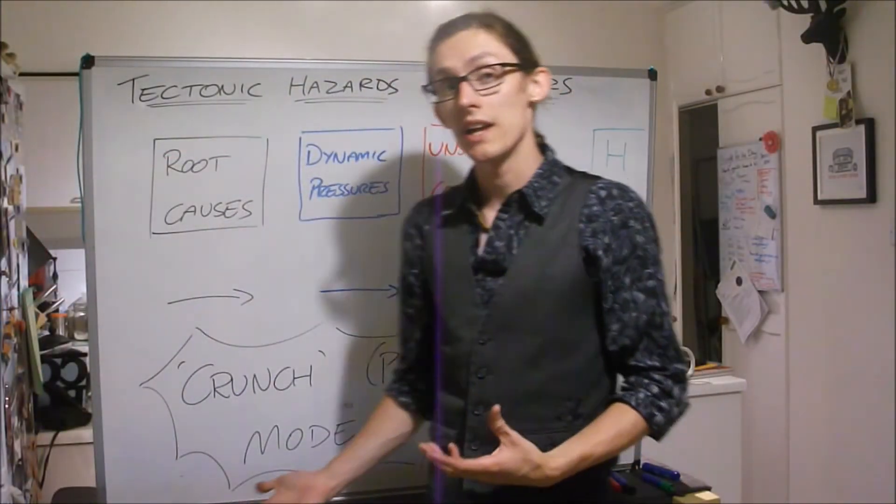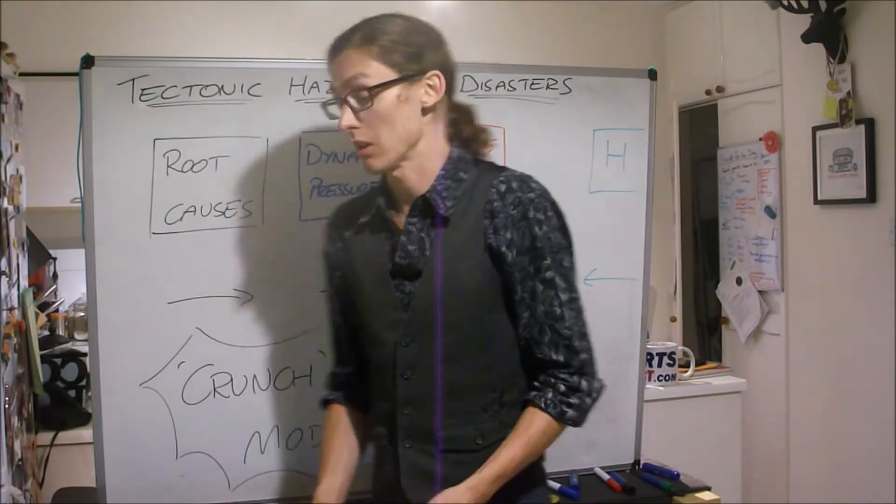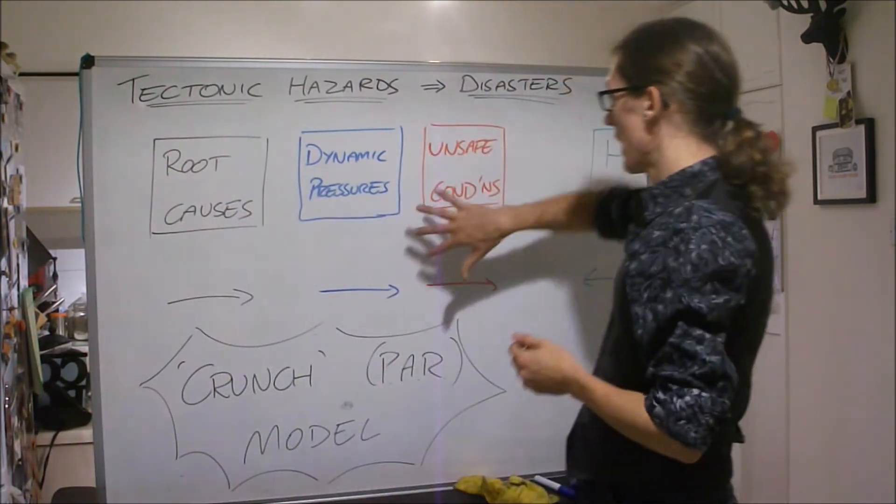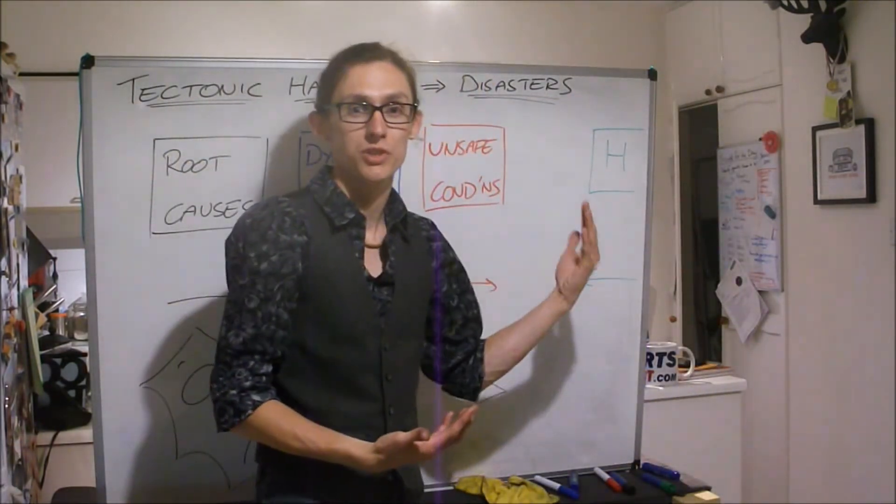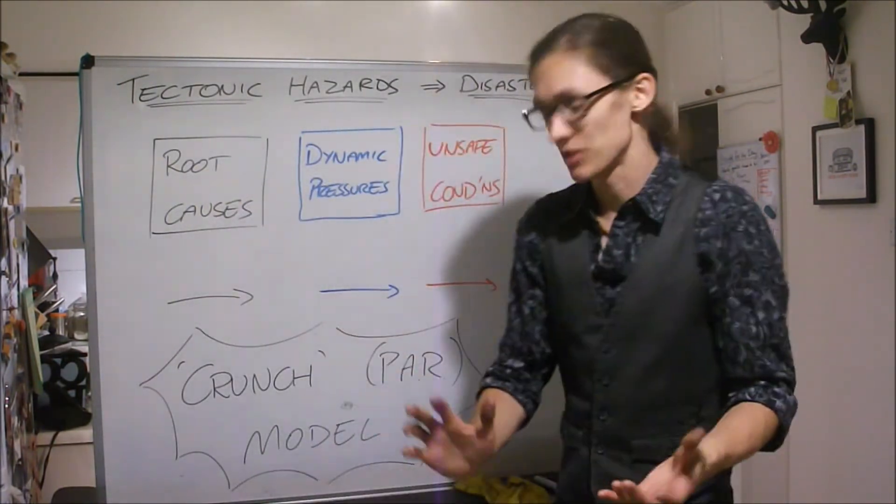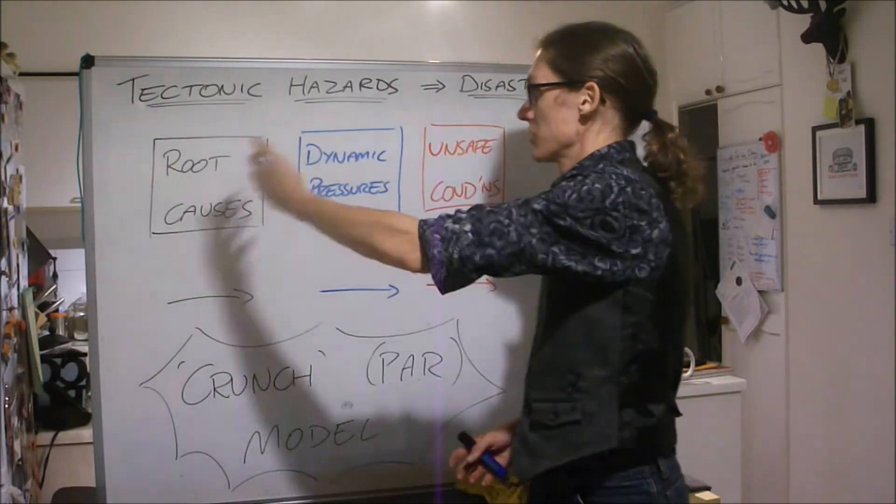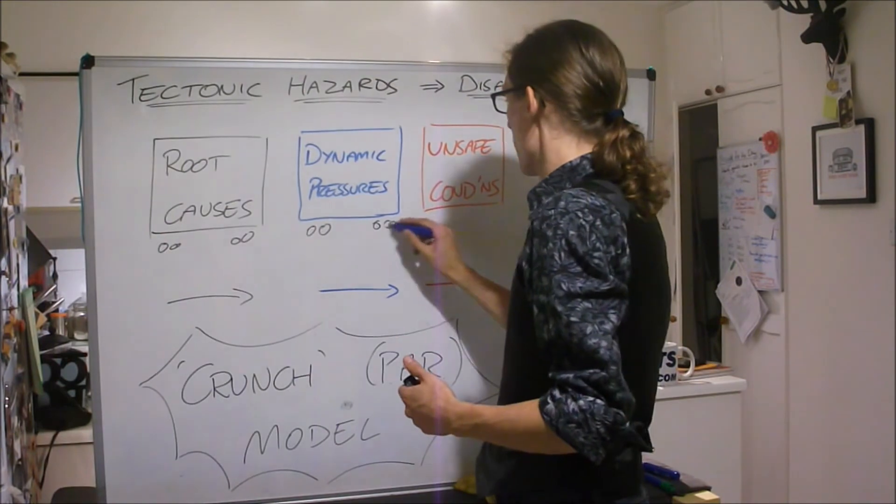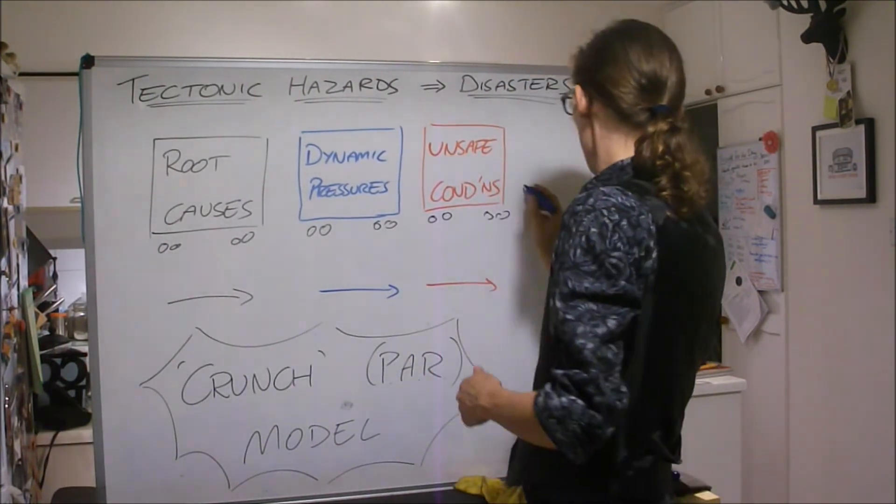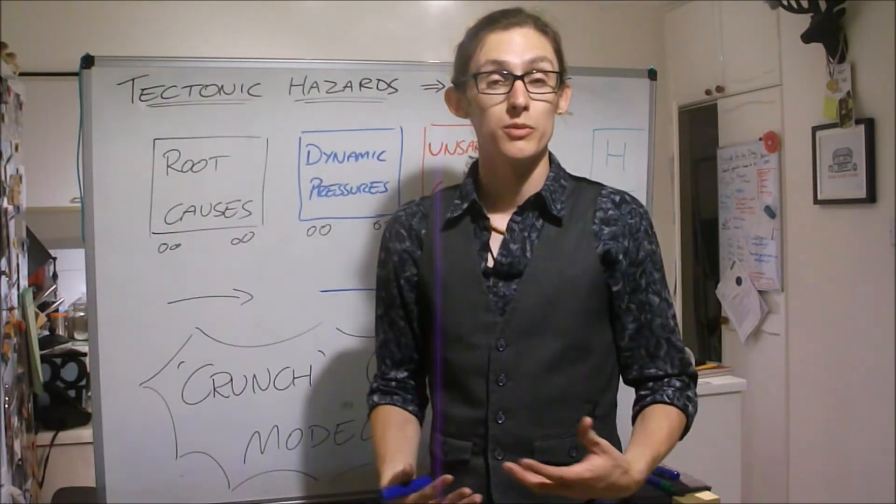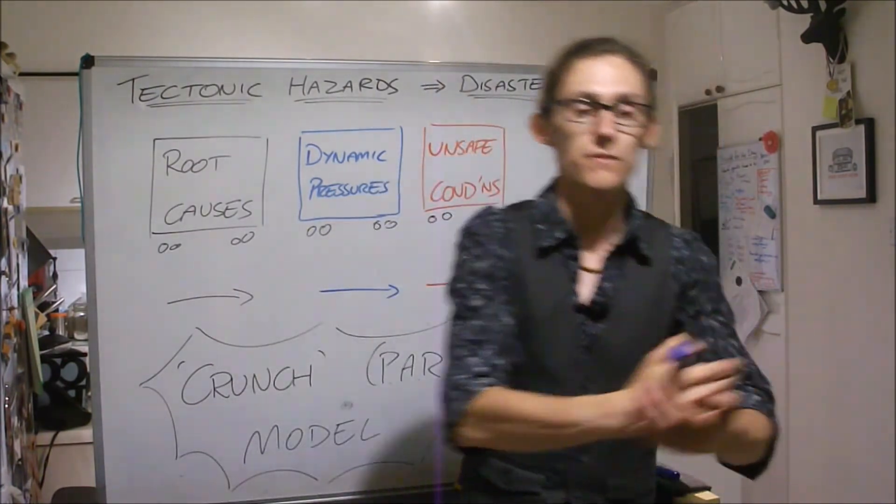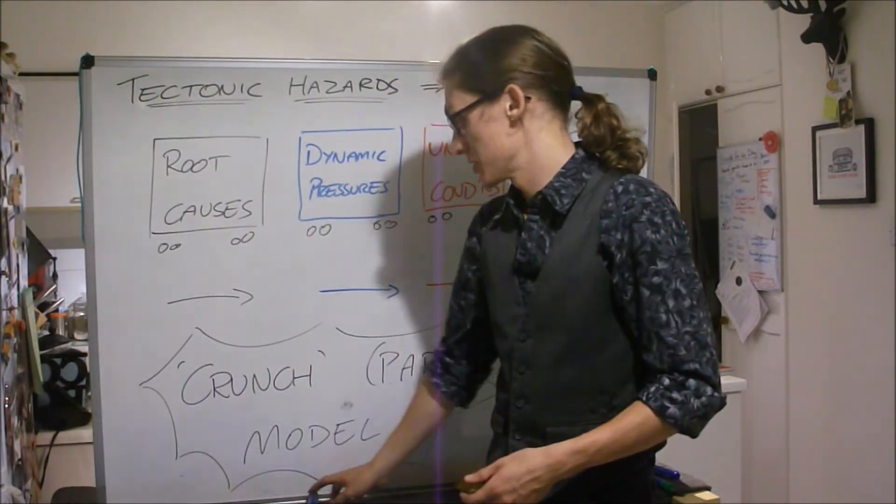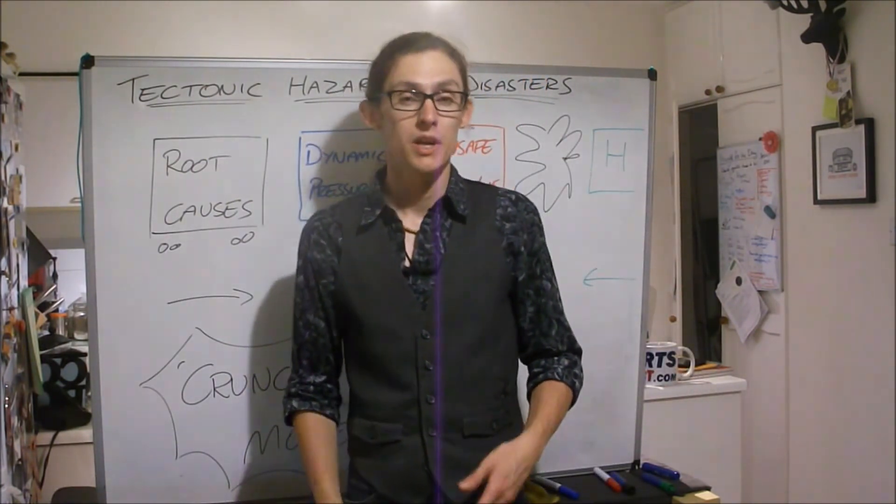If we turn this on its side, we get the CRUNCH model or the Pressure and Release model. We've got the root causes pushing in, we've got dynamic pressures pushing in, and the unsafe conditions pushing in. And we've got hazards coming in from the opposite direction. You can think of each of these as being like more weight behind the vulnerability. This is like the vulnerability train, if you like, and each one is a new carriage, more weight. It's coming straight at the hazard. So the more vulnerability, the more of these boxes that you have, the more of an impact it's going to have, the more of a disaster you're going to get. It's known as the Pressure and Release model, or the CRUNCH model, and that's how we can understand vulnerability.